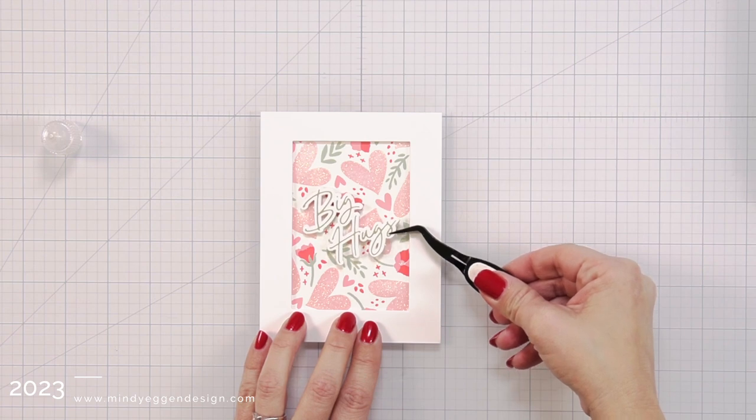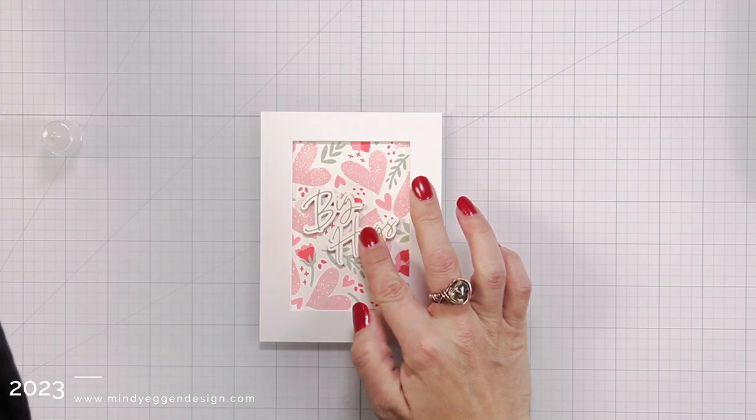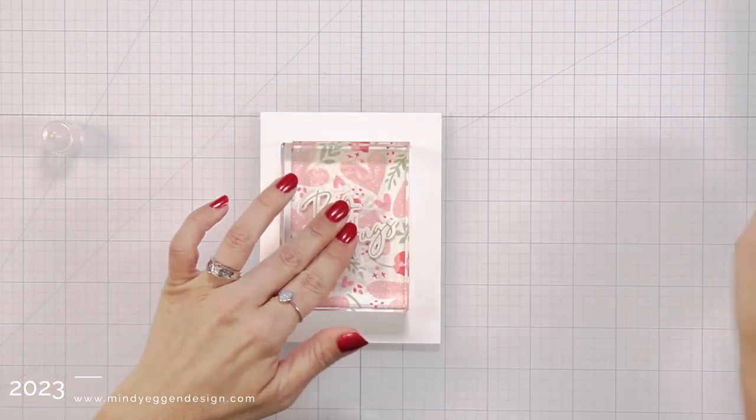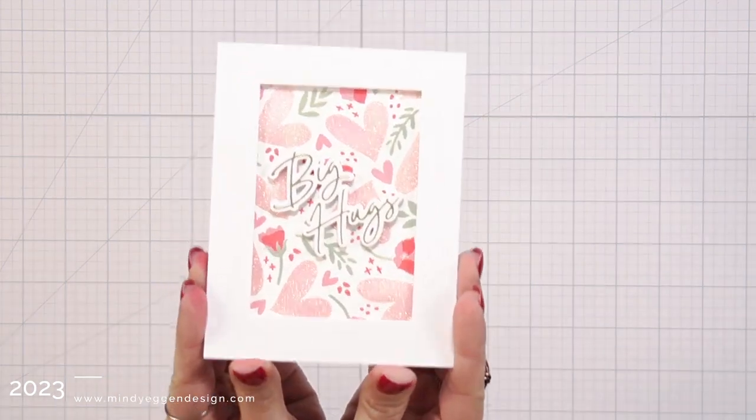Then I'm going to take something heavy. You can take a block or a paperweight and just add it on top so that it really sets into your cardstock because we do have kind of some texture there behind that. So I'll let that sit for about a minute or so. And that's going to finish up the card project.